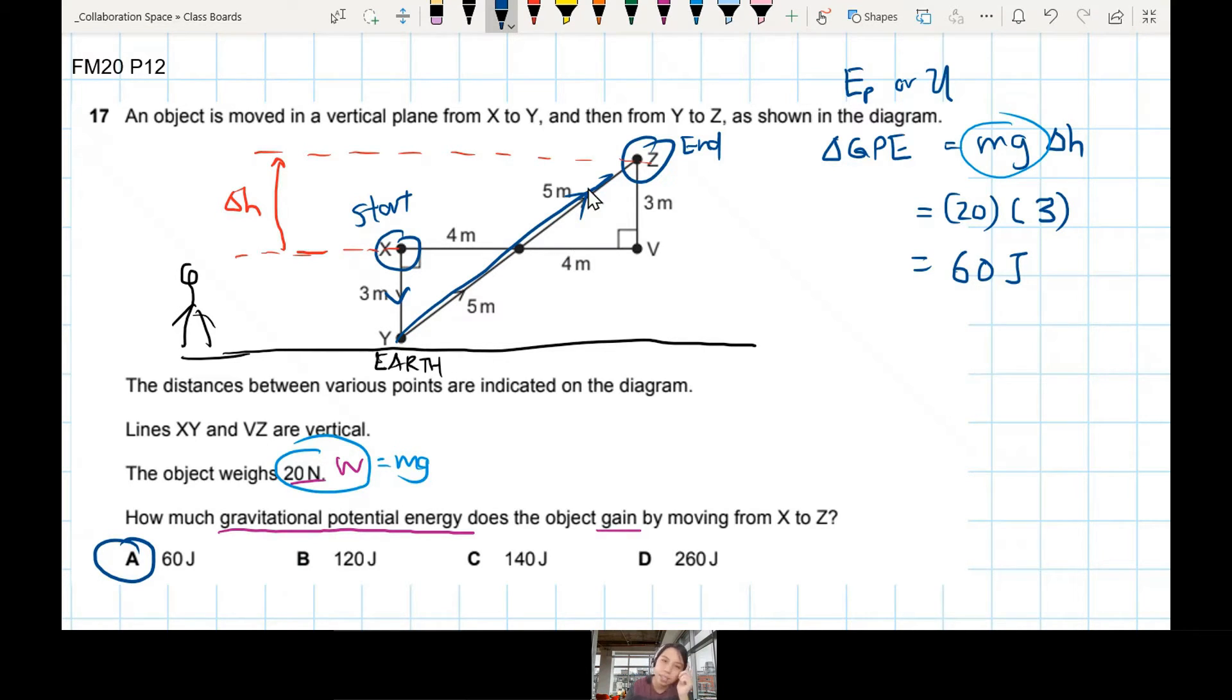The number one question, though, is this. Students will often say, miss, but I thought it go down first, then only it go up. Shouldn't we include the whole path? Not for GPE. This GPE, we only care about final minus initial. So your final GPE, this GPE, is high. At a very high place.